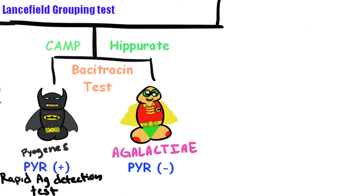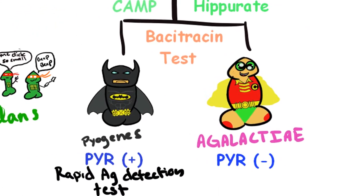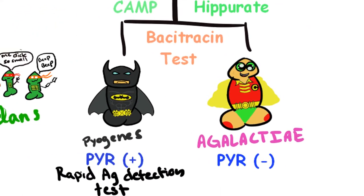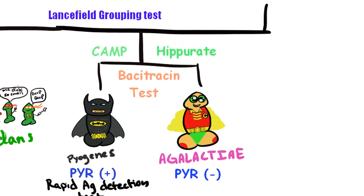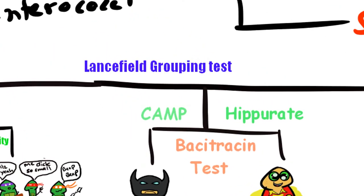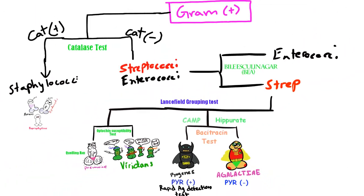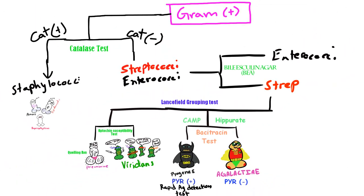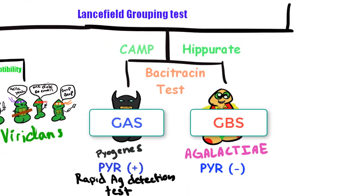We need to distinguish Streptococcus agalactiae from Streptococcus pyogenes, and we can do this with the Lancefield grouping test, which groups bacteria from category A through S based on the type of carbohydrate composition of bacterial antigens found on their cell walls. For Streptococcus pyogenes, it's categorized as Lancefield serogroup A, which is why it's also known as group A streptococci, aka GAS.